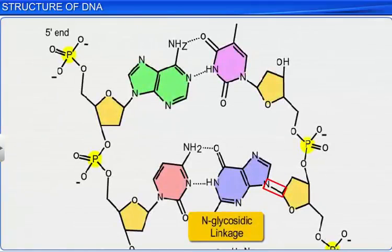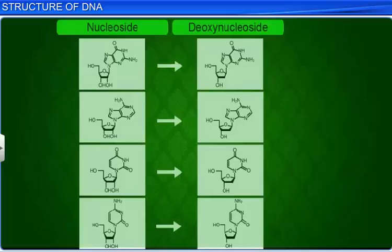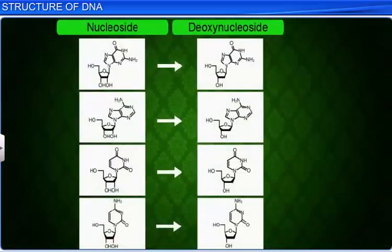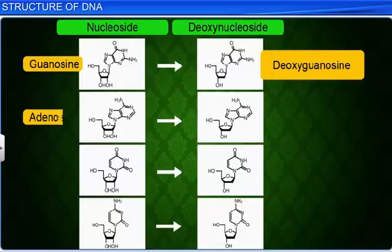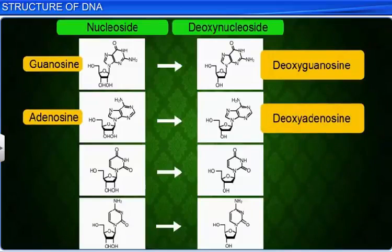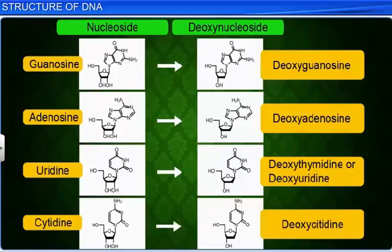Now, through an N-glycosidic linkage, a nitrogenous base is linked to the pentose sugar, forming a nucleoside, which can be guanosine or deoxyguanosine, adenosine or deoxyadenosine, uridine or deoxythymidine, and cytidine or deoxycytidine.